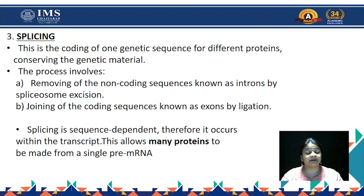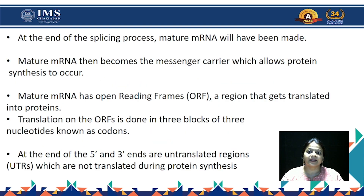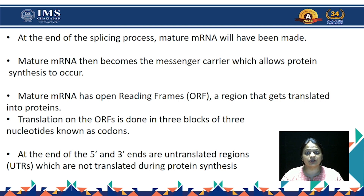Splicing is sequence-dependent — a very important point — and it occurs within the transcript, allowing many proteins to be made from a single messenger RNA. At the end of the splicing process, the mature messenger RNA is made, which then becomes the carrier that allows protein synthesis to occur. The mature messenger RNA has an open reading frame — a region that gets translated into protein — read in three blocks of three nucleotides called codons. At the 5' and 3' ends are untranslated regions, also called UTR regions, which are not translated during protein synthesis.